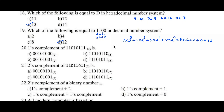Question number twenty: find the 1's complement of 11010111 base 2. To find 1's complement, convert each 1 to 0 and each 0 to 1. After converting all bits, option A is the right answer.